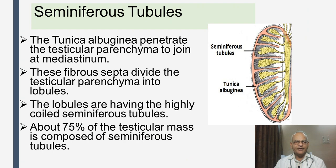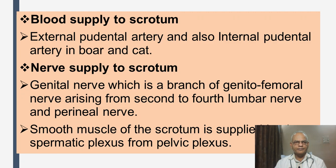The tunica albuginea penetrates the testicular parenchyma to join at the mediastinum in the seminiferous tubules. These fibroseptal divisions divide the testicular parenchyma into lobules, which contain the highly coiled seminiferous tubules; about 75 percent of the testicular mass is composed of seminiferous tubules. Blood supply to the scrotum is from the external pudendal artery and also the internal pudendal artery in the boar and cat. Nerve supply is from the genital nerve, a branch of the genitofemoral nerve arising from the second to fourth lumbar nerves, and the perineal nerve. The smooth muscle of the scrotum is supplied by the spermatic plexus from the pelvic plexus.